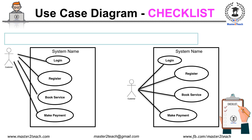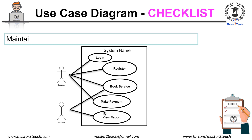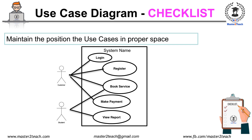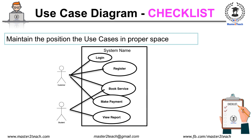Try to maintain the use cases in a half-circle shape, which looks more clear and attractive. Try to maintain the position of use cases in proper shapes inside the system box so that lines don't overlap while drawing relationships between actors and use cases. Check if there is any overlap and whether it can be fixed by repositioning the use cases or actors.